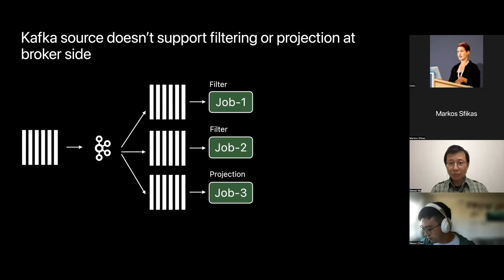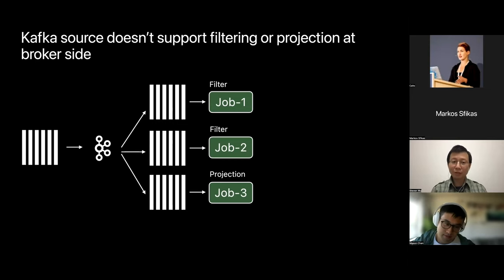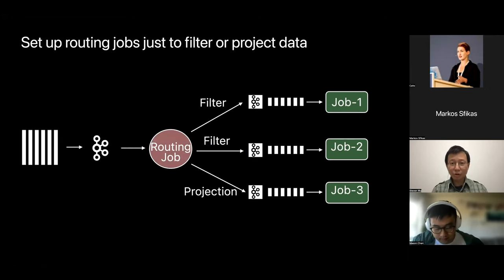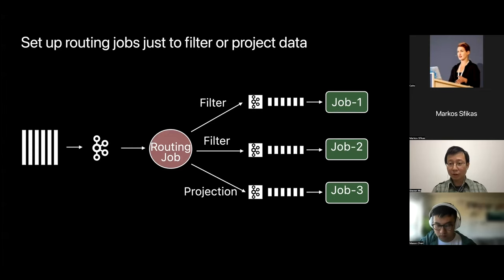Kafka does not support filtering or projection at the broker side. So if we have three consumer jobs all interested in different subsets of data, they all have to pull the whole dataset and do filter projection afterwards — this is not very efficient because everyone pulls data and discards most of it. People have been setting up routing jobs just to do filtering and projection, producing smaller topics for downstream consumers. This is an improvement in efficiency, but it leads to data duplication and additional routing jobs to maintain.